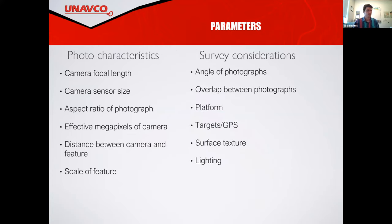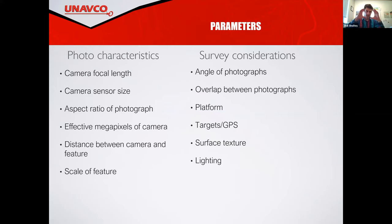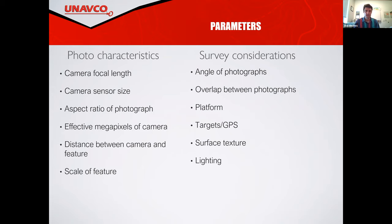There are a lot of different parameters that affect how a structure from motion survey happens. First, we think about the characteristics of the camera itself. What's the focal length? That refers to the angle of view that the camera is able to capture. A long focal length is like a telephoto lens — zoomed in — while a wide or short focal length gives you a much wider image. Obviously, the wider the image is, the more area you capture, but you have a lot more distortion, which can lead to error. So there's kind of a happy medium in there.